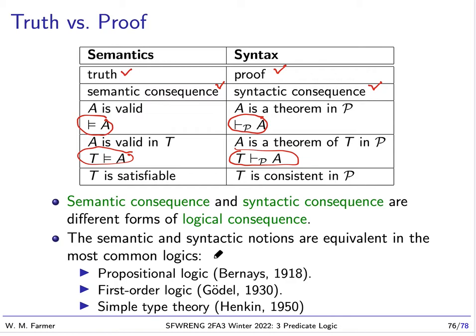Now, we can also say T is satisfiable if and only if T is consistent in the proof system. Now, the logics for which these two notions are equivalent are the most common logics: propositional logic, which Bernays showed this equivalence in 1918.